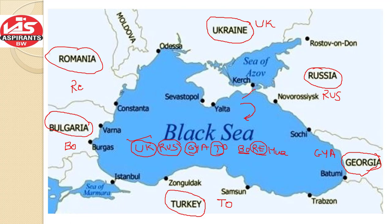Now you can see here that we have the Sea of Azov. The Sea of Azov and the Black Sea are connected by a strait which is known as the Kerch Strait. So remember, the Sea of Azov and the Black Sea are connected by the Kerch Strait.